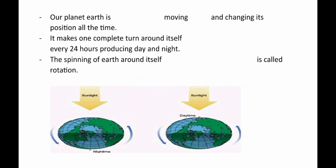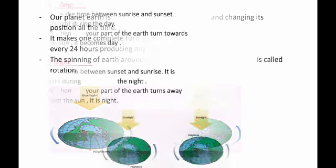Our planet Earth is moving and changing its position all the time. It makes one complete turn around itself every 24 hours, producing day and night. So the rotation of Earth around itself produces day and night. The spinning of Earth around itself is called rotation.